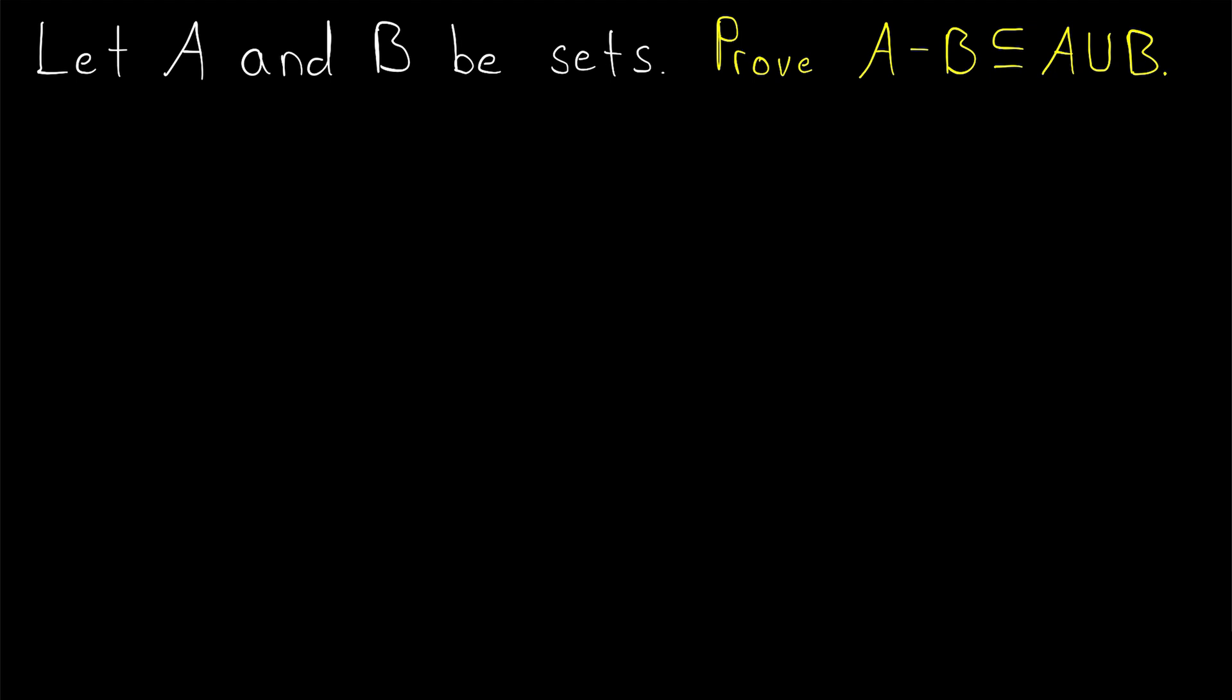All you have to do is consider the definition of A minus B, consider the definition of A union B, and show how any element of A minus B, by definition, will also have to be an element of A union B.